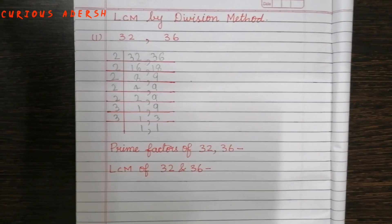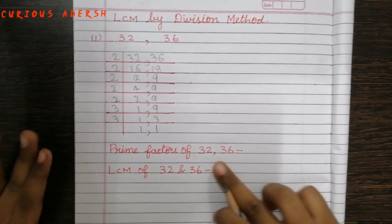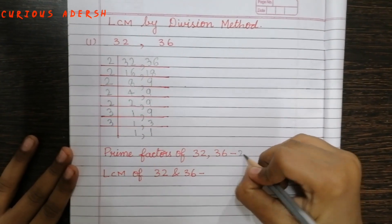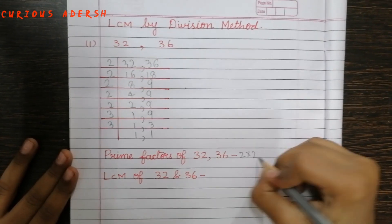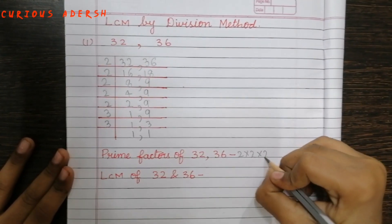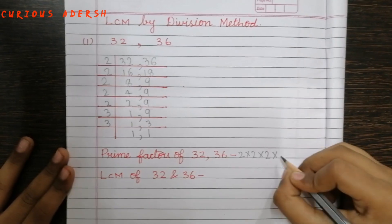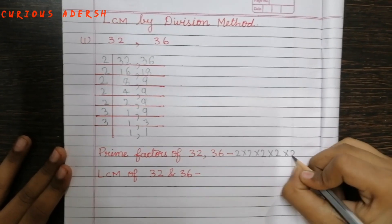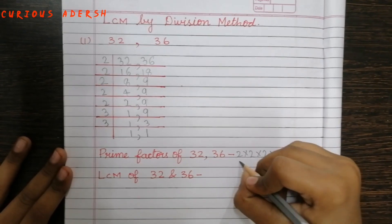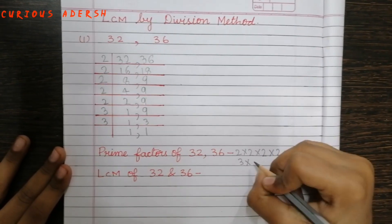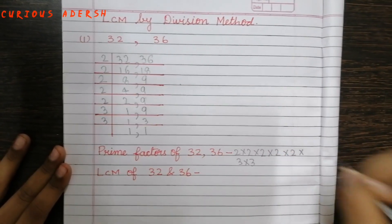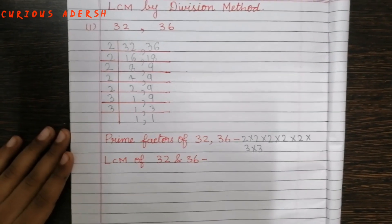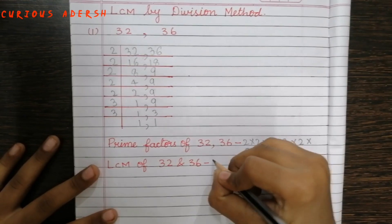Now let's write the prime factors of 32 and 36: 2 x 2 x 2 x 2 x 2 x 2 x 2 x 3 x 3. So the LCM of 32 and 36 is 288.